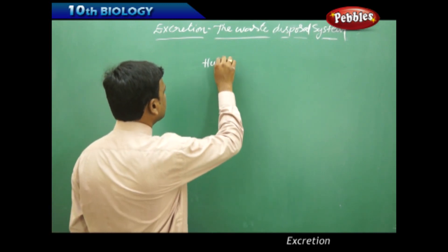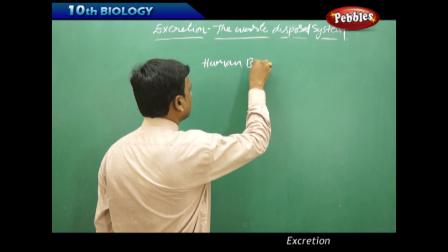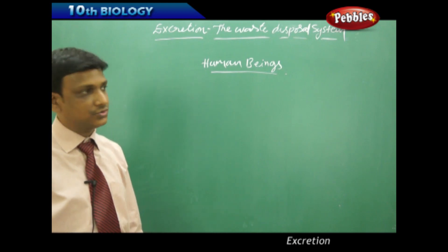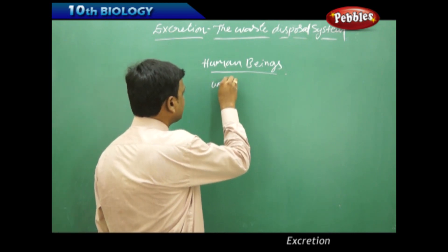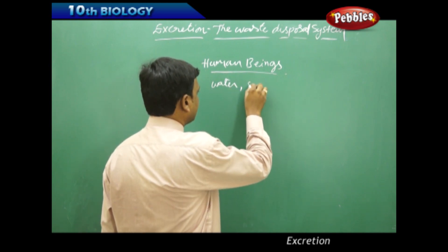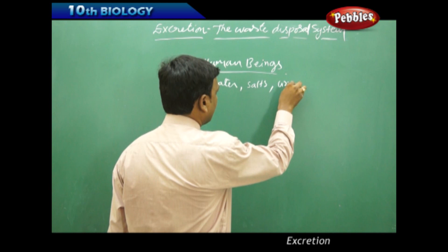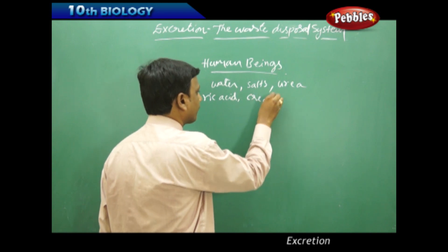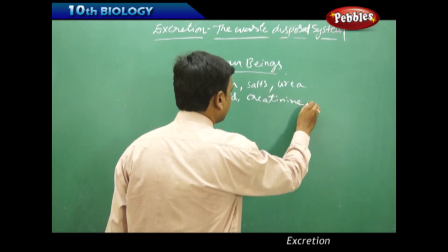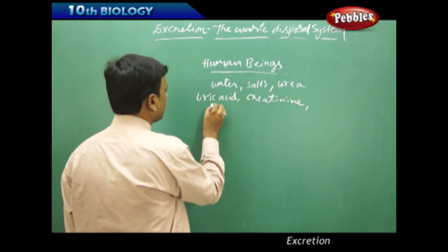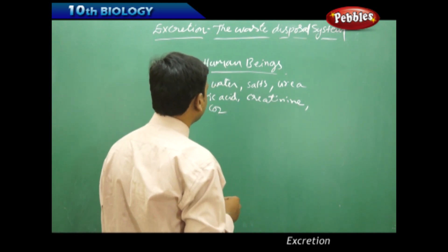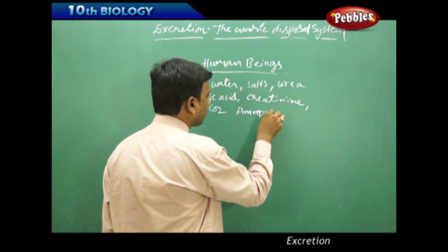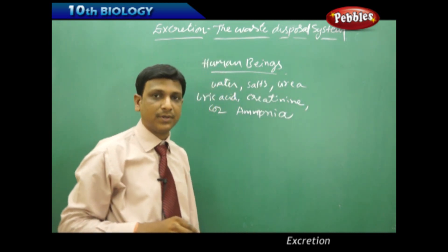Now let us see the process of excretion in human beings. In human beings, various wastes are produced. As we have discussed earlier, the wastes that are produced are water, salts, urea, uric acid, creatinine, and other salts, as well as carbon dioxide. Ammonia is also an important nitrogenous waste that is produced in the body of humans.